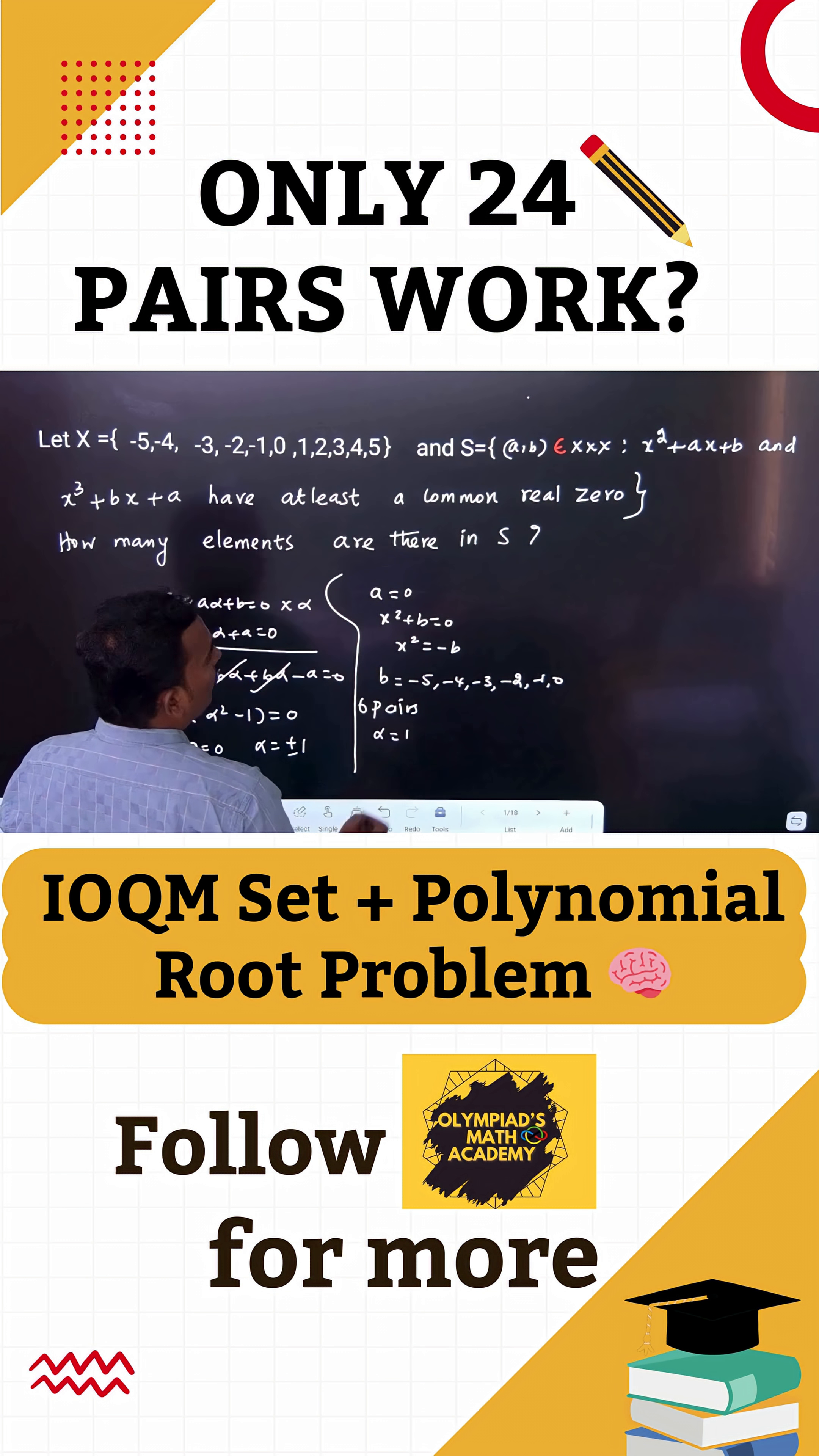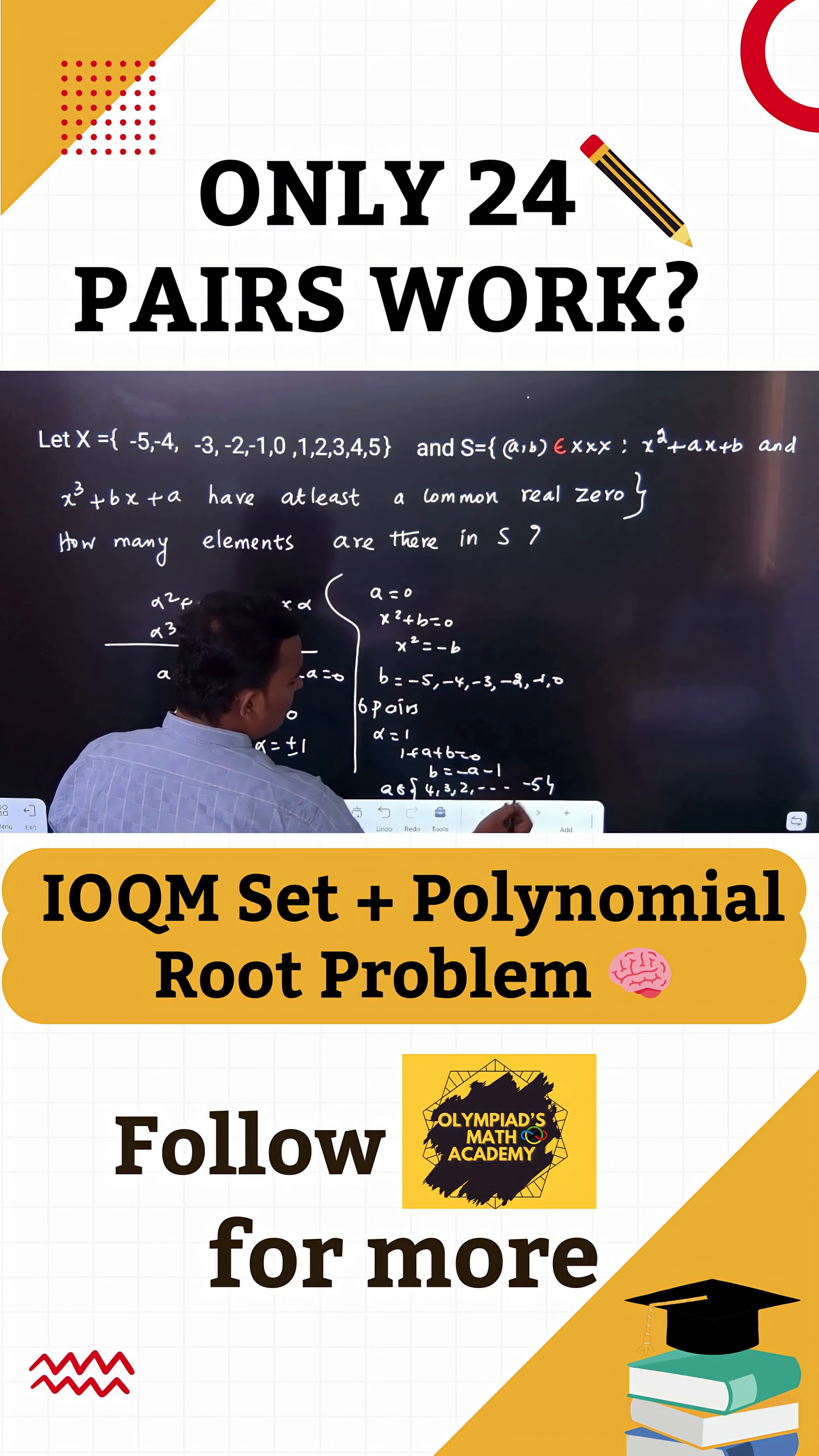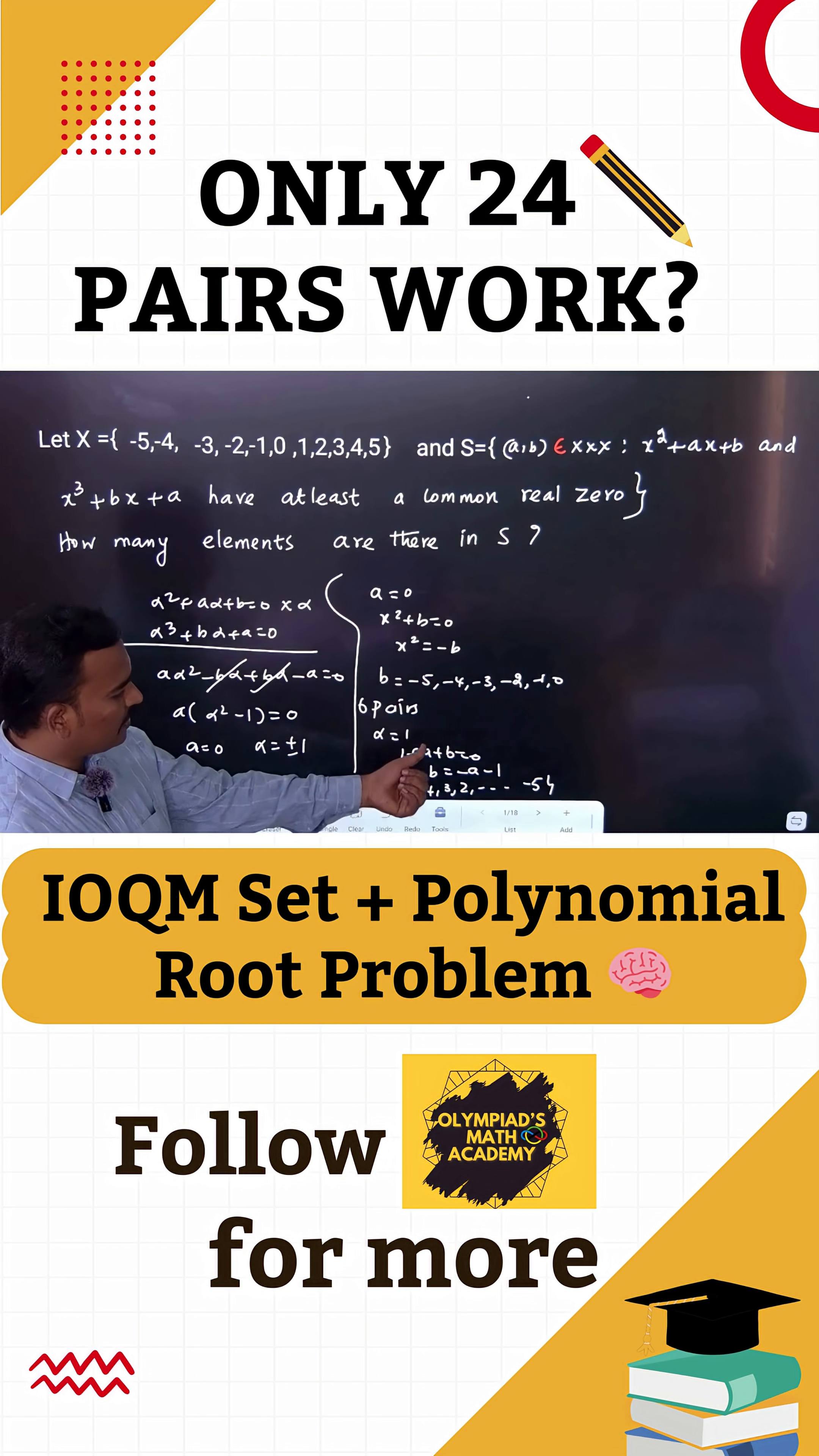When alpha equals 1, we have 1 plus A plus B equals 0, so B equals minus A minus 1. What are the possible values of A? You can take 4, 3, 2, 1 down to -5. It satisfies the condition, so it is included in the pair. Therefore, 10 pairs possible.